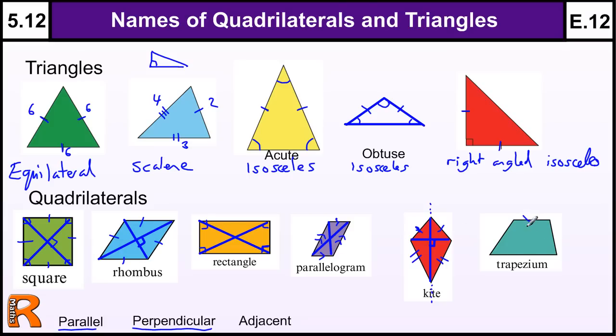Trapeziums are four-sided shapes that have only one pair of parallel sides. As soon as you get two parallel sides, it becomes a parallelogram. But if you only have one pair of parallel sides, it's a trapezium.